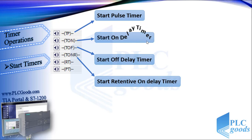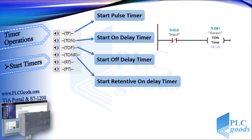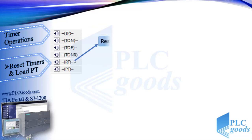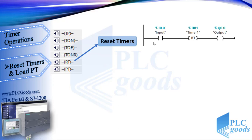For example, suppose we've inserted an on-delay timer. With this program I can start timer 1 from another network with a preset time of 10 seconds. Also this is its FBD symbol. Here are reset and load preset instructions. The reset instruction is used to reset timers — like this program, which can reset timer 1 with the I0.0 address. Note that both sides of this instruction have the same RLO, so if the I0.0 address is activated, timer 1 is reset and also Q0.0 will be on.